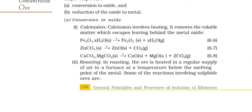Conversion to oxide. Calcination. Calcination involves heating. It removes the volatile matter which escapes leaving behind the metal oxide. ZnCO3 on heating gives ZnO plus CO2.